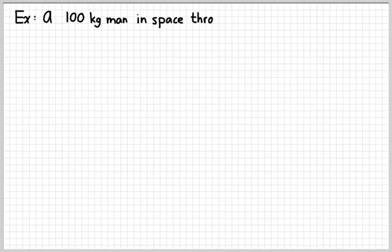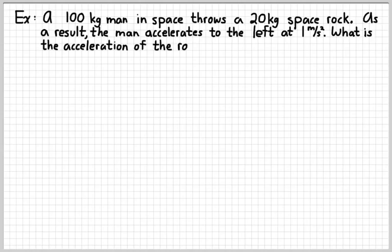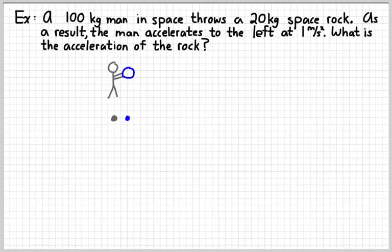Let's look at another simple example. Suppose we have a 100-kilogram man in space — you might call that a space man — and he throws a 20-kilogram space rock. As a result, the man accelerates to the left at one meter per second squared. There's a reaction force on the man caused by the space rock, so he's going to accelerate backwards. The question is: what is the acceleration of the rock? I'm going to draw a free body diagram for each of them.